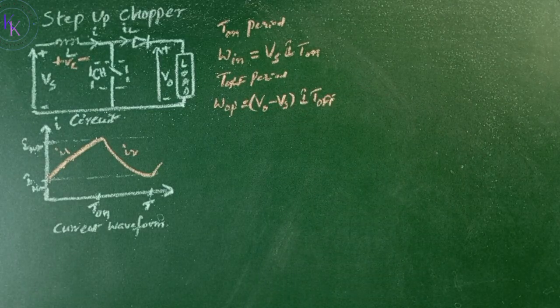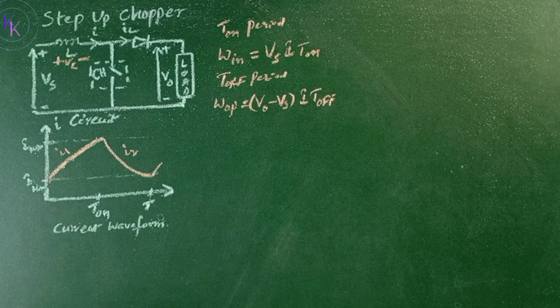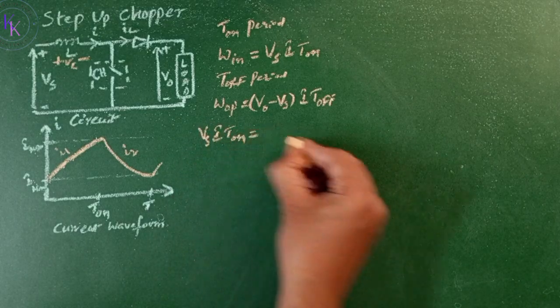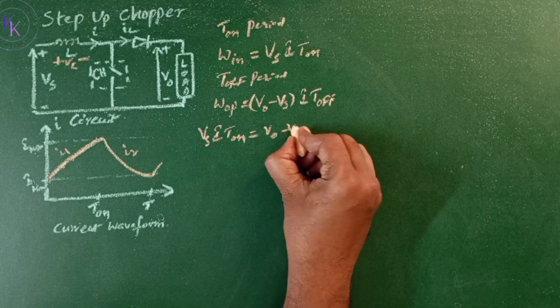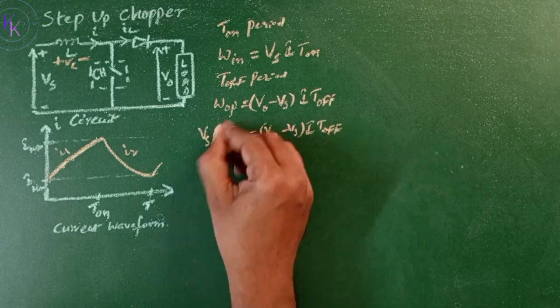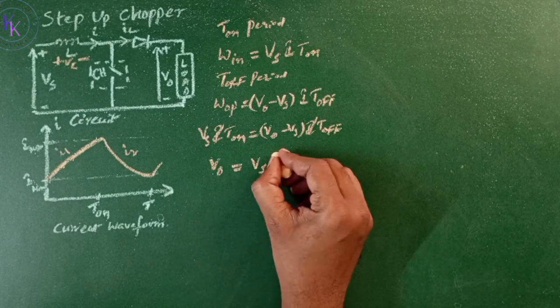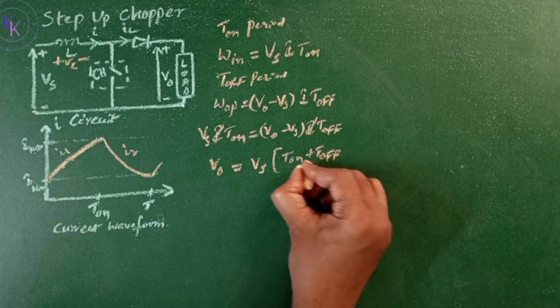Under steady state condition, these two energies will be equal. Then Vs times I times T on equals (V0 minus Vs) times I times T off. V0 equals Vs times (T on plus T off) divided by T off.